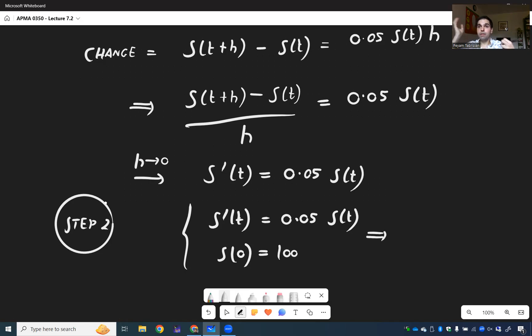So, in fact, again, please do not do separation of variables. I'm begging you. Just use Ce^(kt). So, in this case, 100 e^(0.05t).